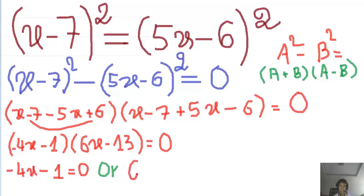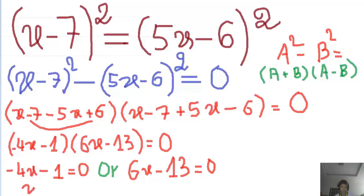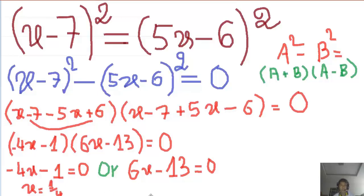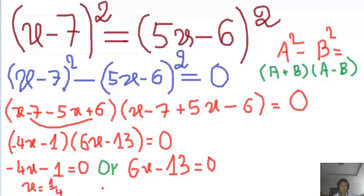Okay, so: 6x minus 13 equals 0. Okay, so h has answer 2, and this h equals 1 over 4 — that is, 1 divided by 4. So x equals 1 over 4.